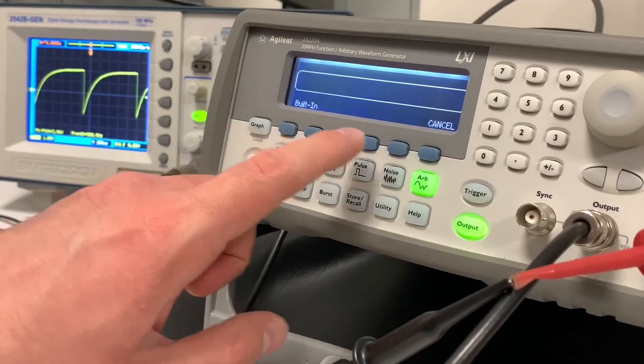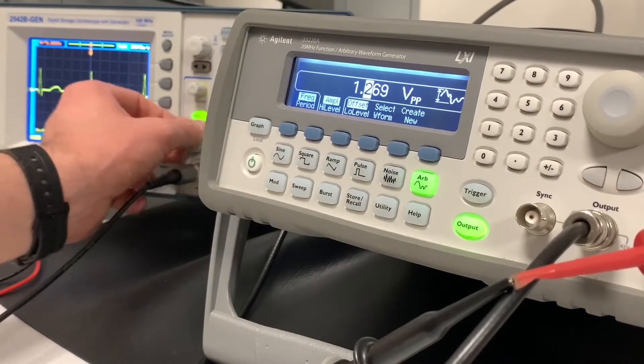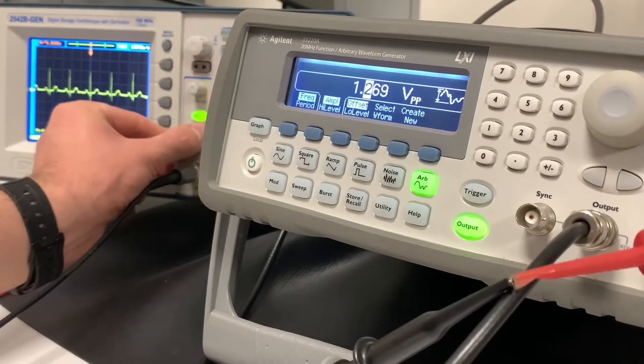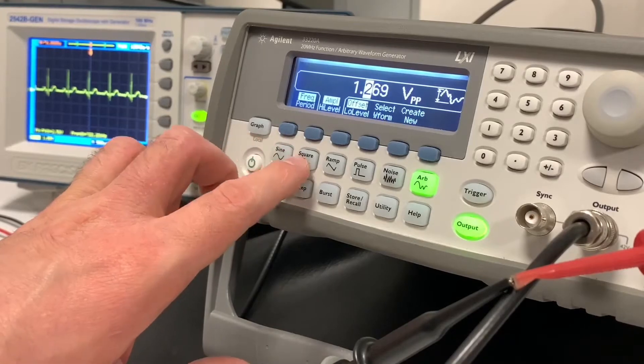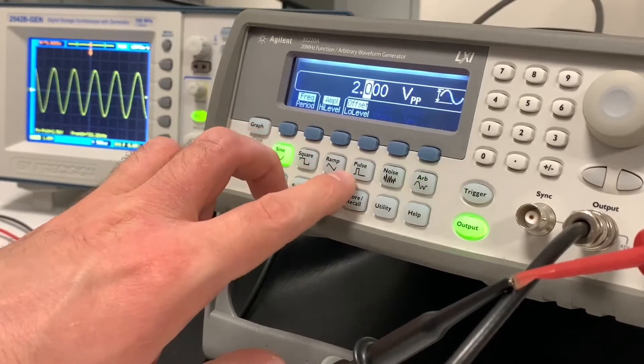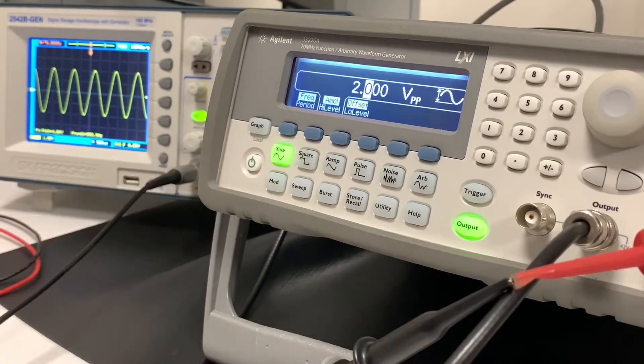There are some arbitrary ones in here. So I can go to waveform select, built in, and then cardiac, and it will make a fake heartbeat on this oscilloscope. But more than likely you're just going to be using sine wave, square wave, and ramp, or even pulse. Those are the four that you'll probably be using the most in electronics.